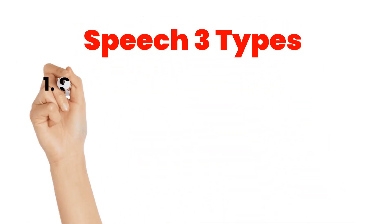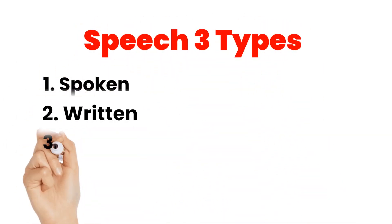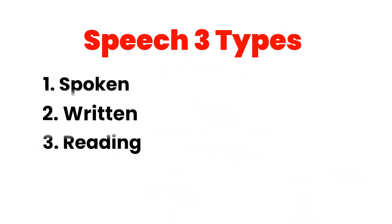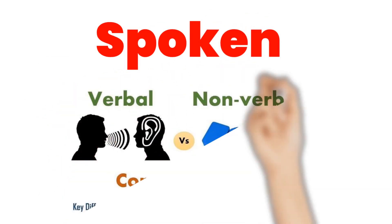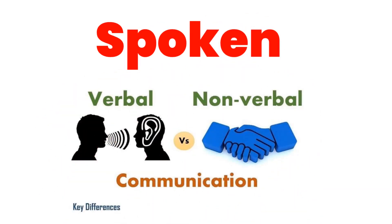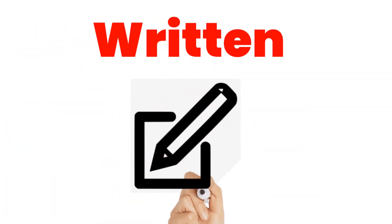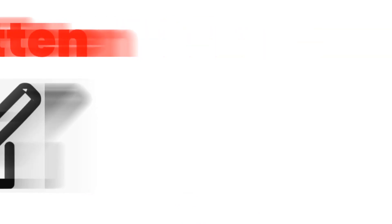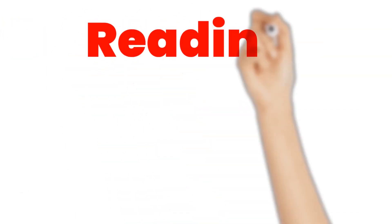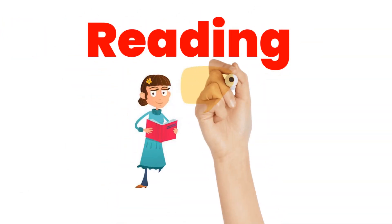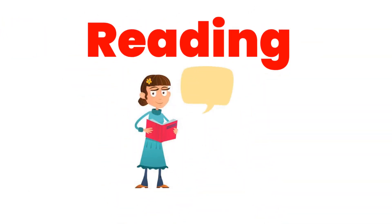Speech has three types: spoken form, written form, and reading form. Spoken form is where ideas are expressed verbally. Written speech is where ideas are expressed through written words, and reading speech is where written symbols are expressed verbally.